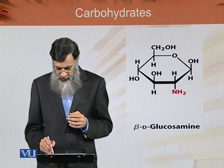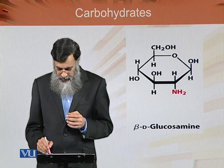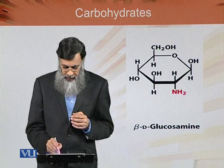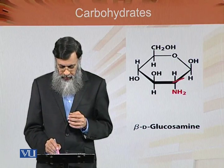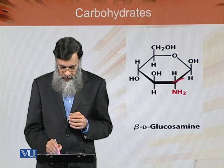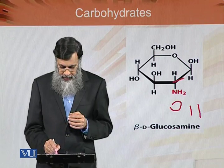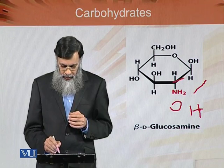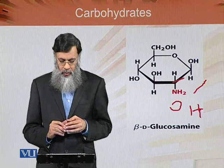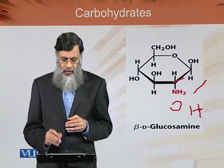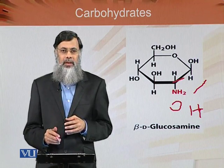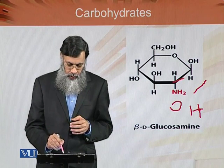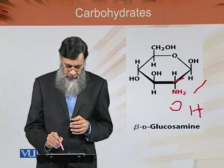We can see the reddish area which shows NH2 — this is the second carbon. Instead of an OH group, we have attached an NH2 group. So this sugar, which is glucose, is converted into glucosamine. This beta-D glucosamine structure is formed by the addition of the amino group at carbon atom number 2.